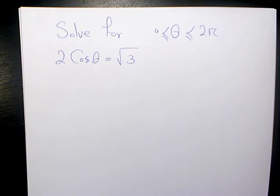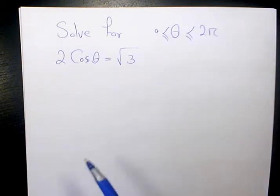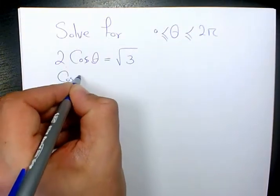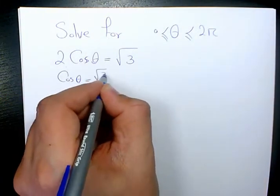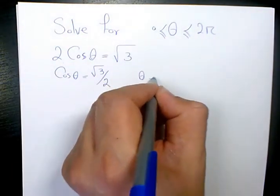I want to solve 2 cosine theta equals root 3 in this example. We need to solve it for theta when theta is changing from 0 to 2 pi. So 2 cosine theta equals root 3. I need to isolate it for cosine theta. Cosine theta equals root 3 divided by 2. And then I need to solve it for theta.